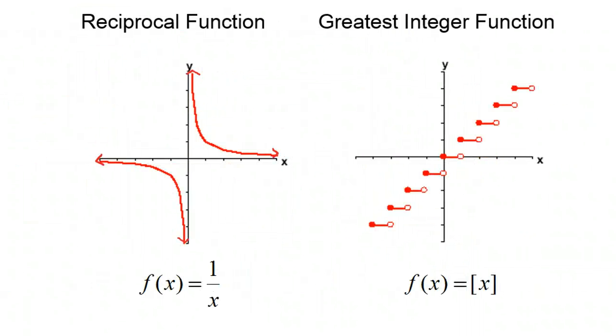The last two functions are the reciprocal function, which is f(x) equals 1 over x. We get two branches and they both hug the x-axis and the y-axis. And we'll look at more functions like that in a week or two. And then the greatest integer function, we've already talked about that. That has a different kind of notation there that you'll have to be aware of.